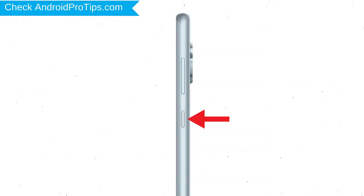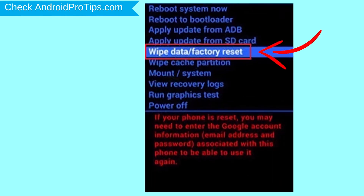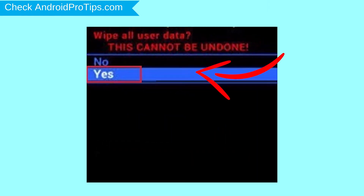Then, while holding down the power button, press and release the volume up button. Navigate with the volume buttons to select the wipe data and factory reset option, and press the power button.